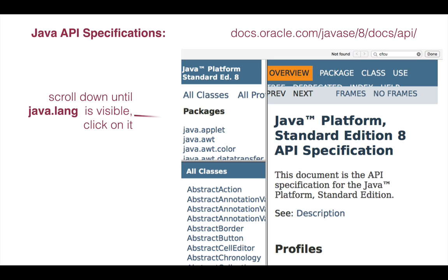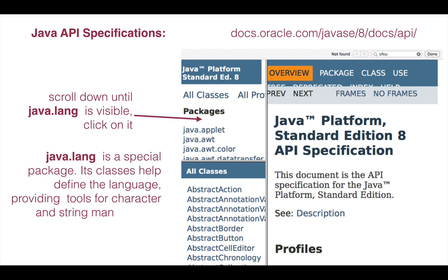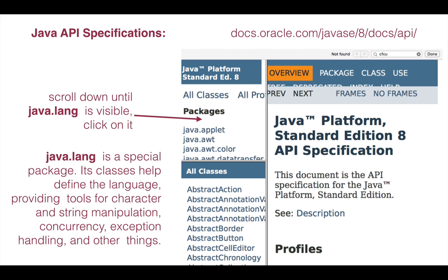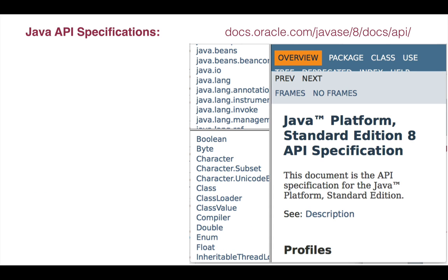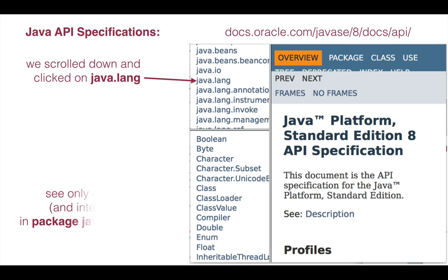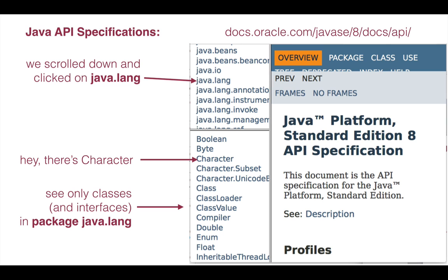Scroll down the list of packages and choose package java.lang, which stands for Java language. Classes in java.lang help to define the language — for example, providing tools for character and string manipulation. Now the lower left pane shows only the classes in package java.lang. Look — there's class Character. We'll look at it later.